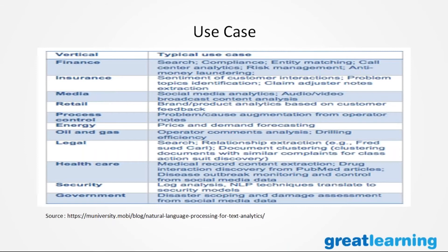Looking at domain-specific use cases — in finance, for credit card processing, you can analyze transaction history at the card or customer level and apply text analytics to understand customer spending behavior. Risk analytics models can also use text analytics with respect to transaction levels — how transactions are happening, where, and at what level — to bring value out of the financial data.